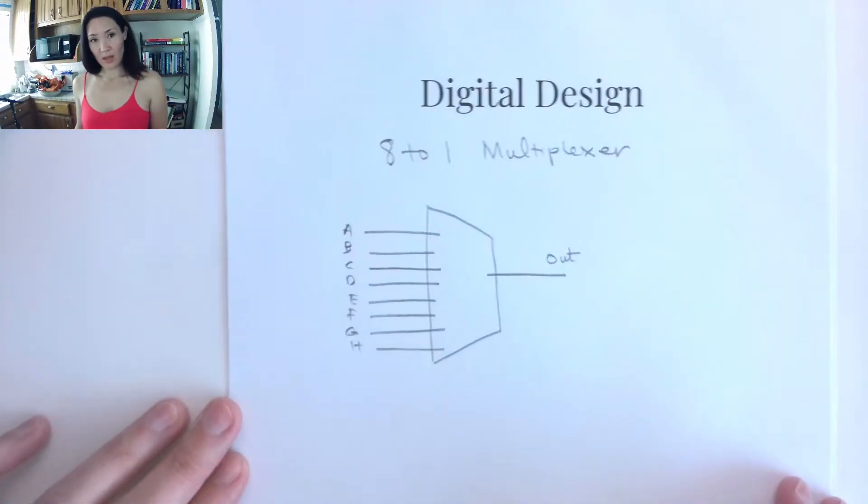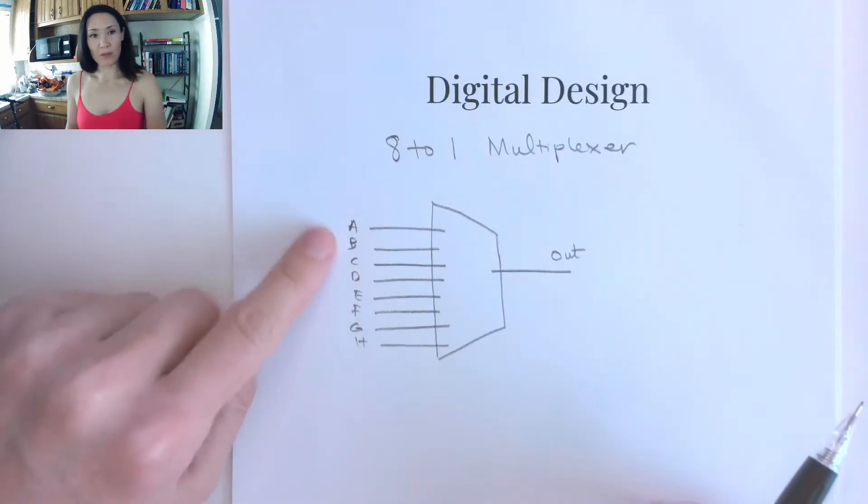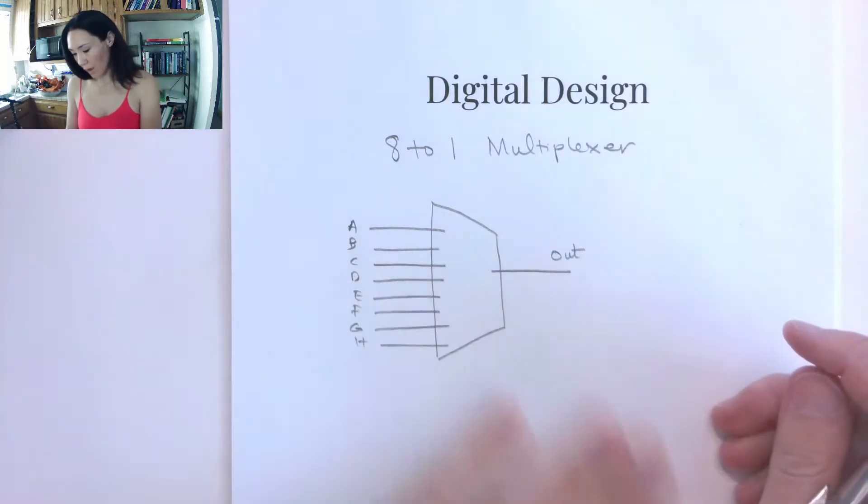Hi students, let me show you the 8-to-1 multiplexer. So this time we have 8 data inputs coming in over here and 1 data output.